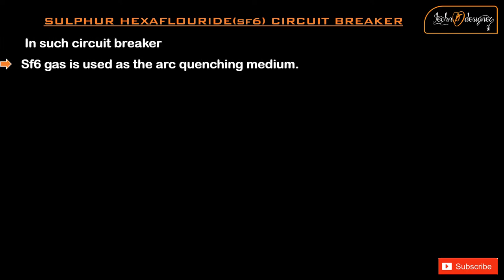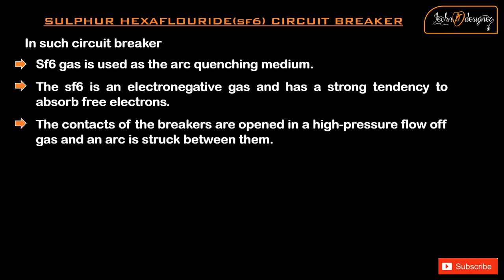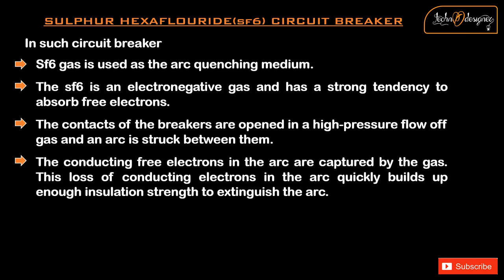Sulfur hexafluoride (SF6) circuit breaker: In such circuit breakers, SF6 gas is used as the arc-quenching medium. SF6 is an electronegative gas and has a strong tendency to absorb free electrons. The contacts of the breaker are opened in a high-pressure flow of SF6 gas and an arc is struck between them. The conducting free electrons in the arc are captured by the gas, which quickly builds up enough insulation strength to extinguish the arc.